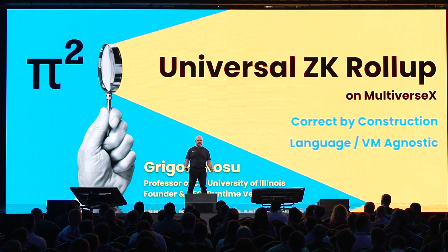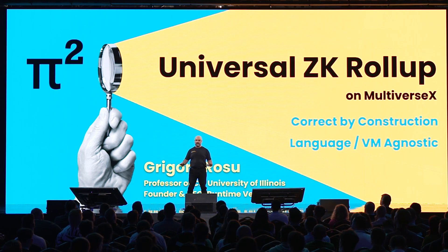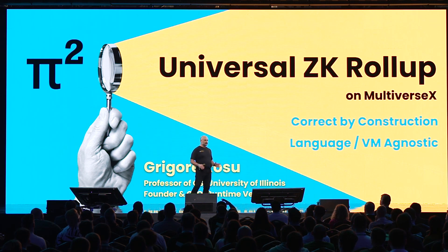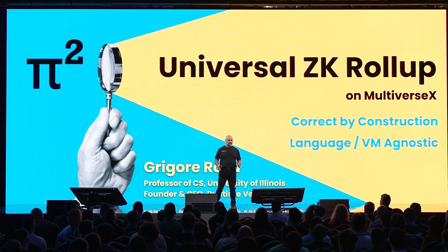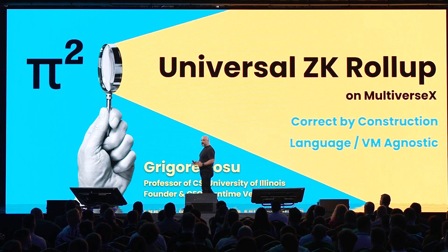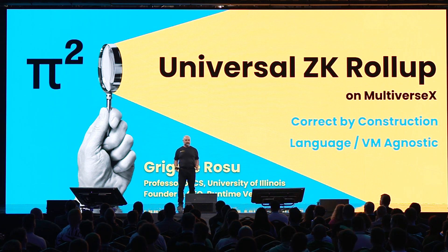Runtime Verification and MultiverseX have a long history of successful partnerships and collaborations. We helped them from day zero to mathematically and rigorously analyze their code and protocols. Because of these successful collaborations, we are currently discussing a new partnership where we will deploy Pi-squared for the first time on MultiverseX.